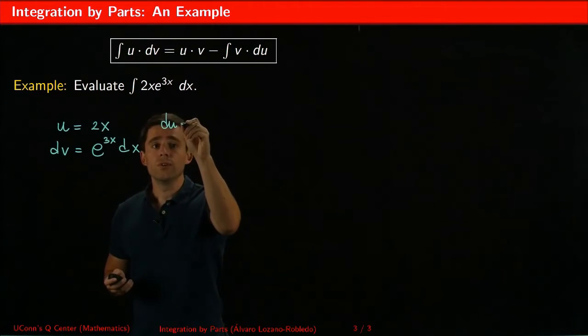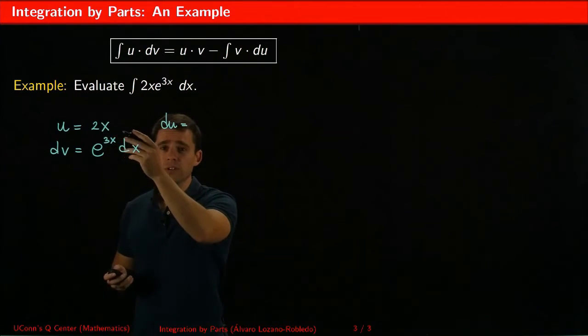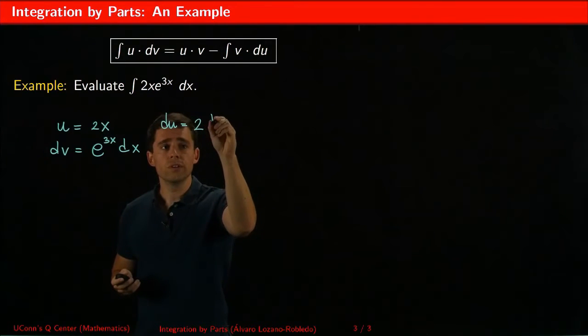Now I can find du. du is the derivative of 2x with respect to x which is just 2 dx.